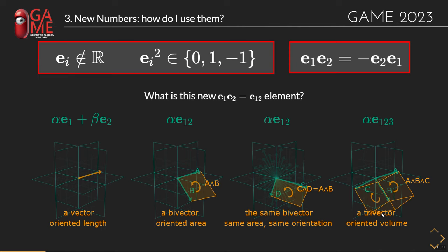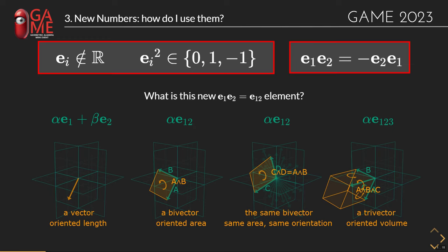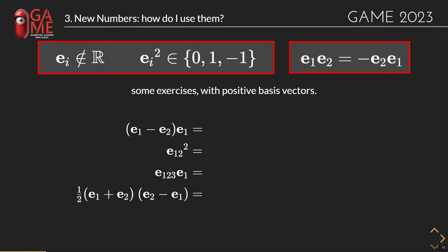The bivector truly is this oriented two-dimensional area. If we throw in a third vector, we get a trivector representing an oriented volume. Again, many different configurations of vectors can represent the same trivector.